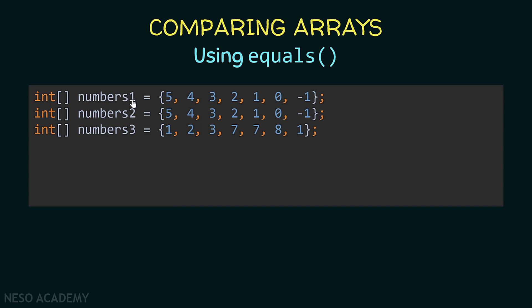Suppose that we have these three arrays. As you can see, they are arrays of integers: numbers one, numbers two, and numbers three. If you look at numbers one and numbers two, they are equal because they contain equal elements — the first element equals the first, the second equals the second, and so on up to the last one. But numbers one and numbers three are not equal because not all the elements are equal; for example, the first element is not equal to the first element.